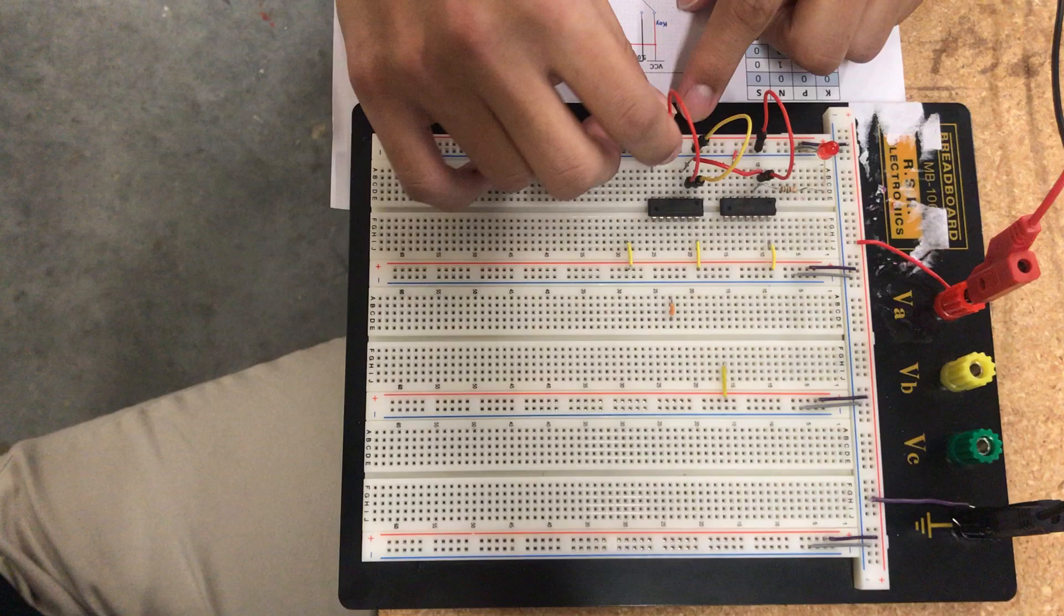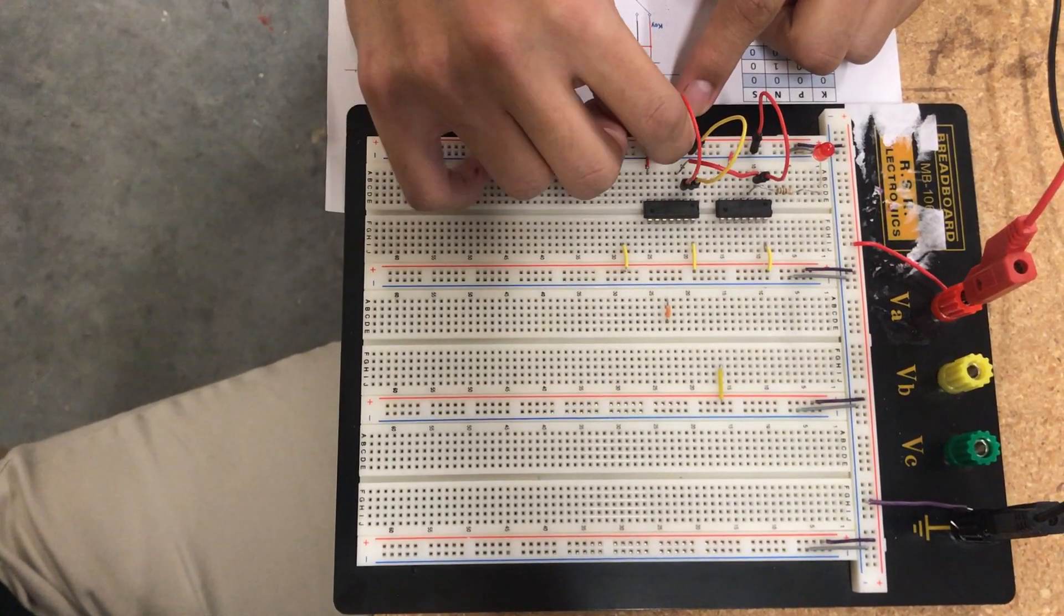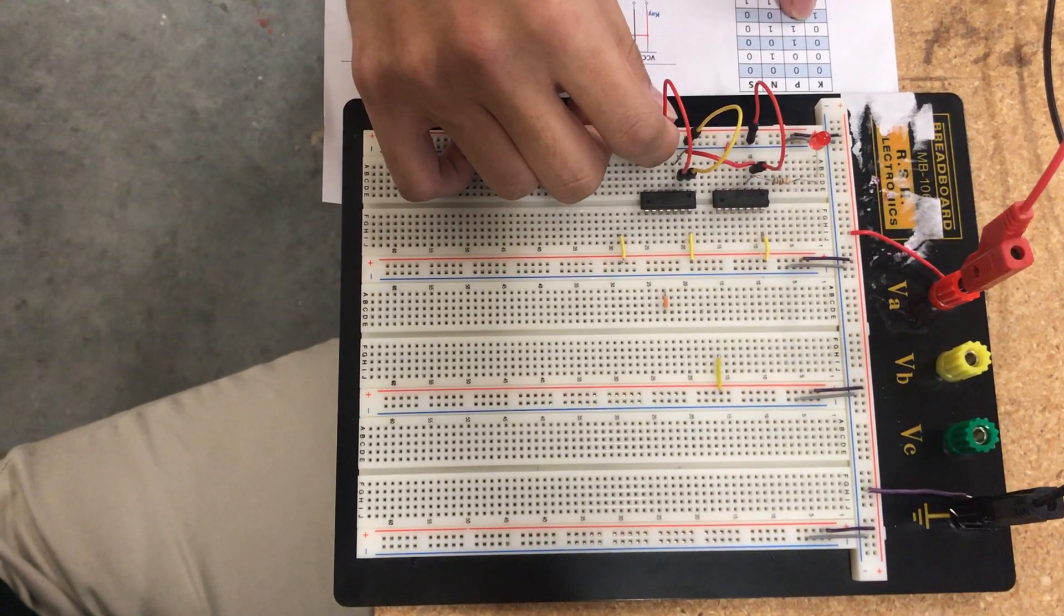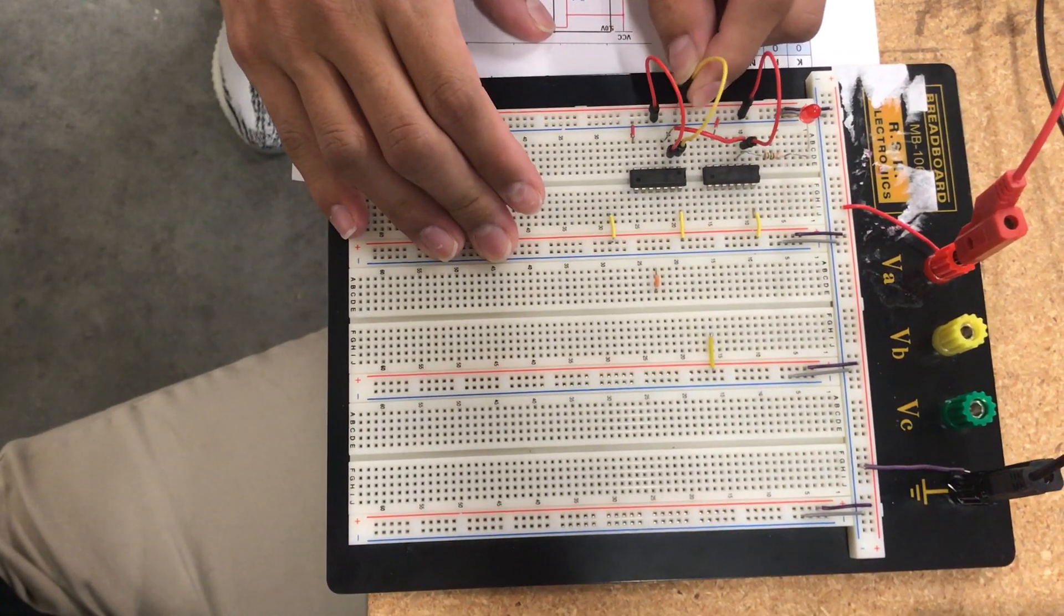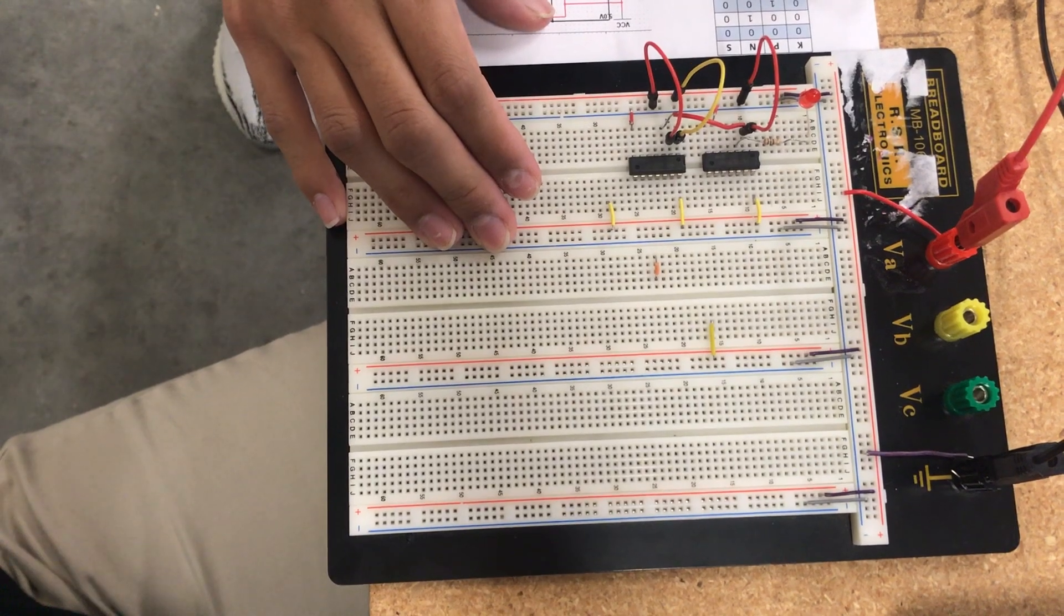And then the next one: zero zero one. Switch it over, should be a zero. Zero one zero. Should be a zero for the output.